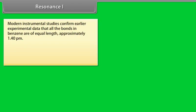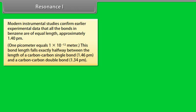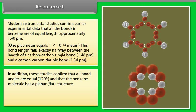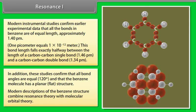Resonance 1. Modern instrumental studies confirm earlier experimental data that all the bonds in benzene are of equal length, approximately 1.40 picometer. One picometer equals 1 into 10 raised to the power minus 12 meter. This bond length falls exactly halfway between the length of a carbon-carbon single bond, 1.46 picometer, and a carbon-carbon double bond, 1.34 picometer. In addition, these studies confirm that all bond angles are equal, 120 degrees, and that the benzene molecule has a planar or flat structure. Modern descriptions of the benzene structure combine resonance theory with molecular orbital theory.